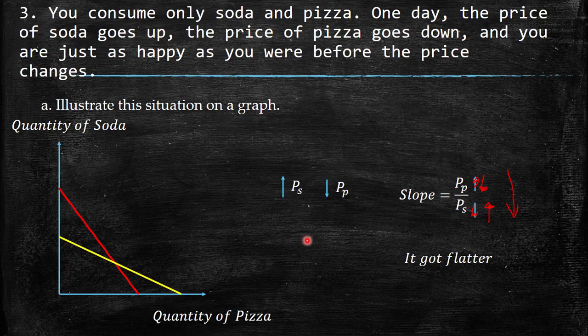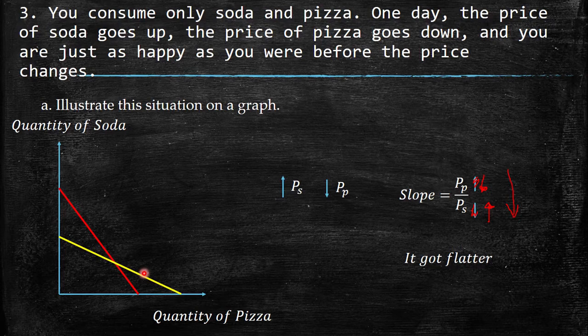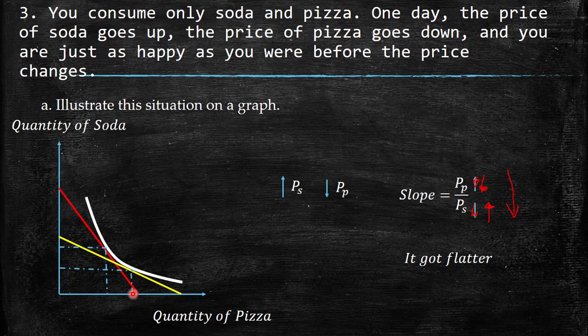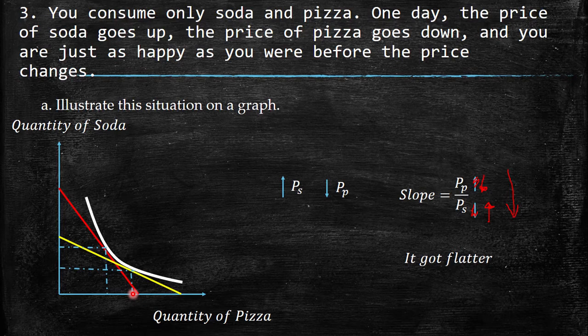The budget constraint shifts: you cannot consume as much soda since its price went up, but you can consume more pizza since its price went down. You started at bundle A and now consume bundle B. As you can see, both A and B are on the same indifference curve — so you are just as happy as before. The increase in soda's price is compensated by the decrease in pizza's price.